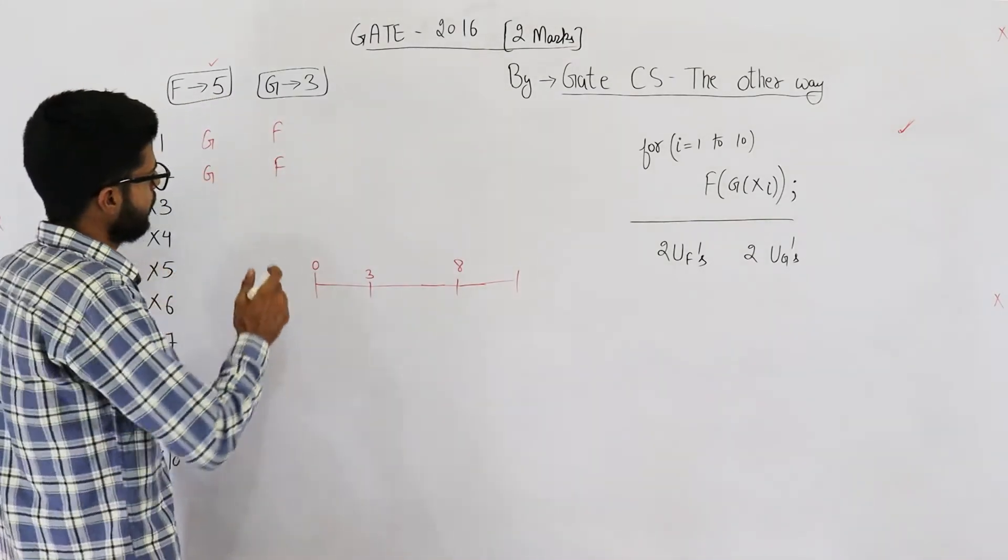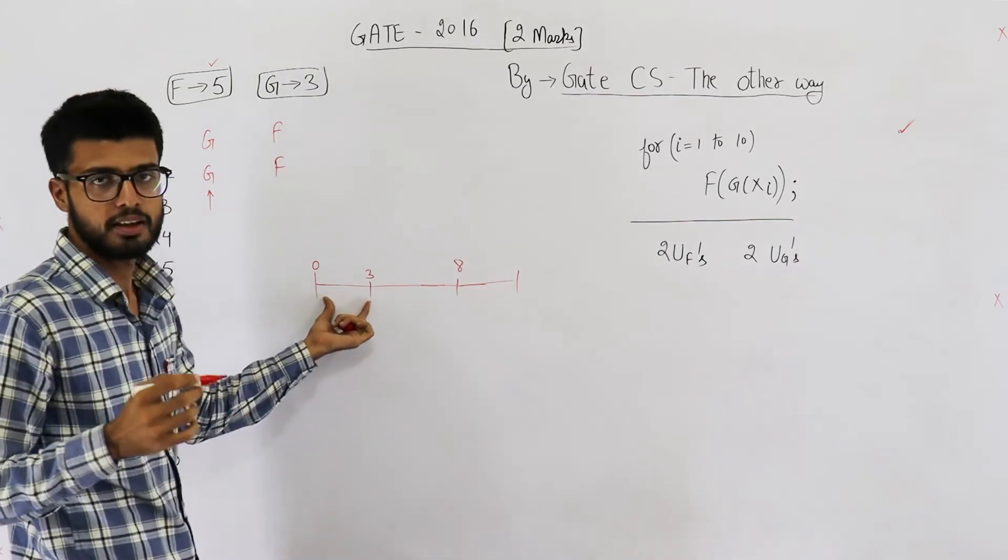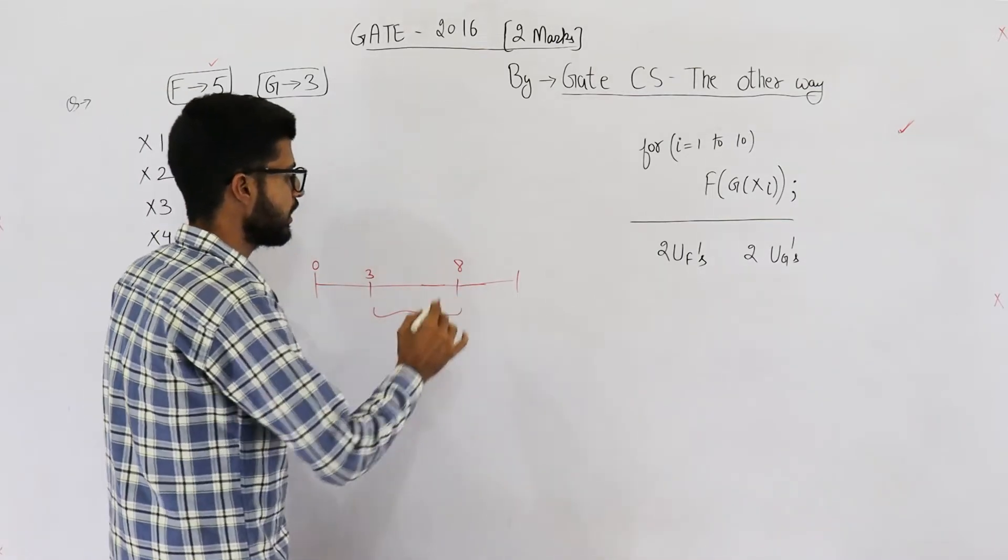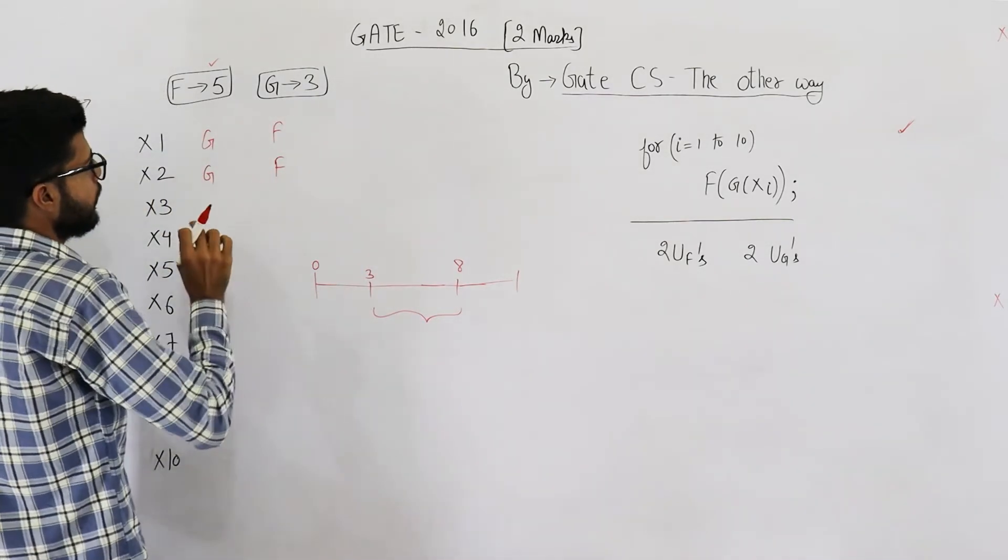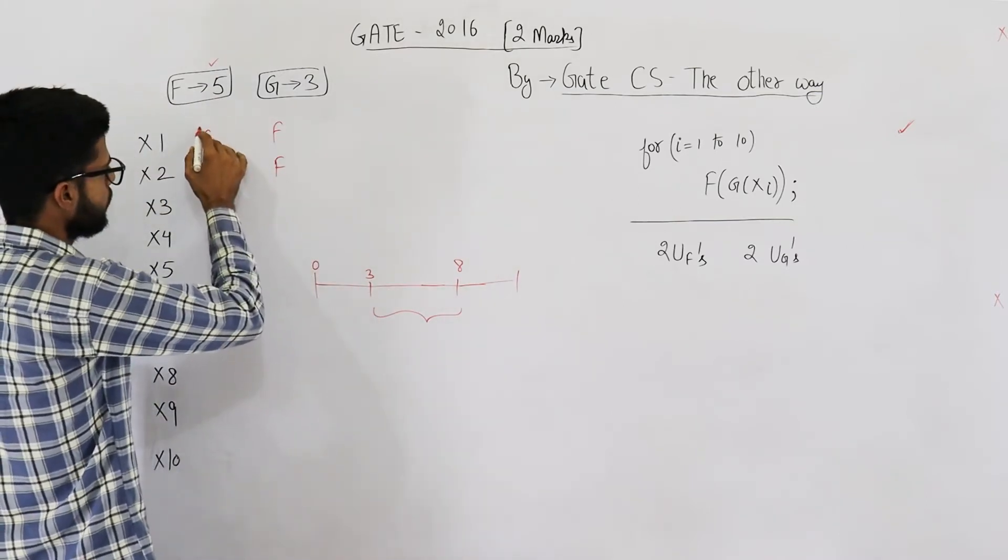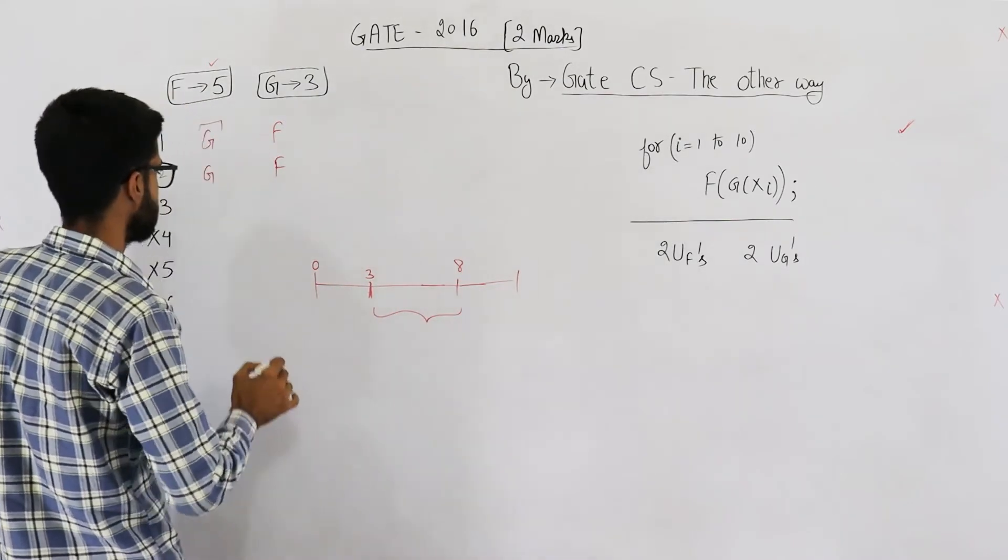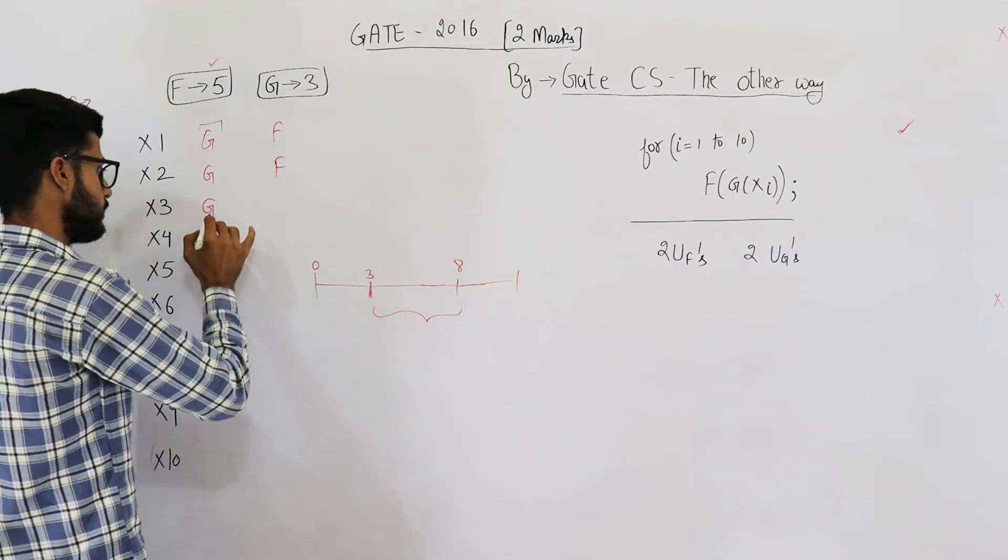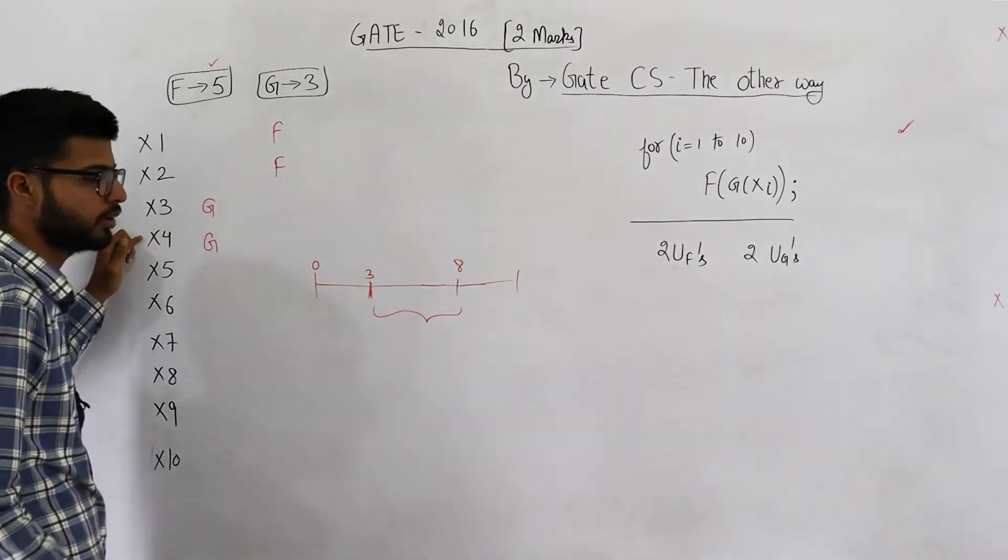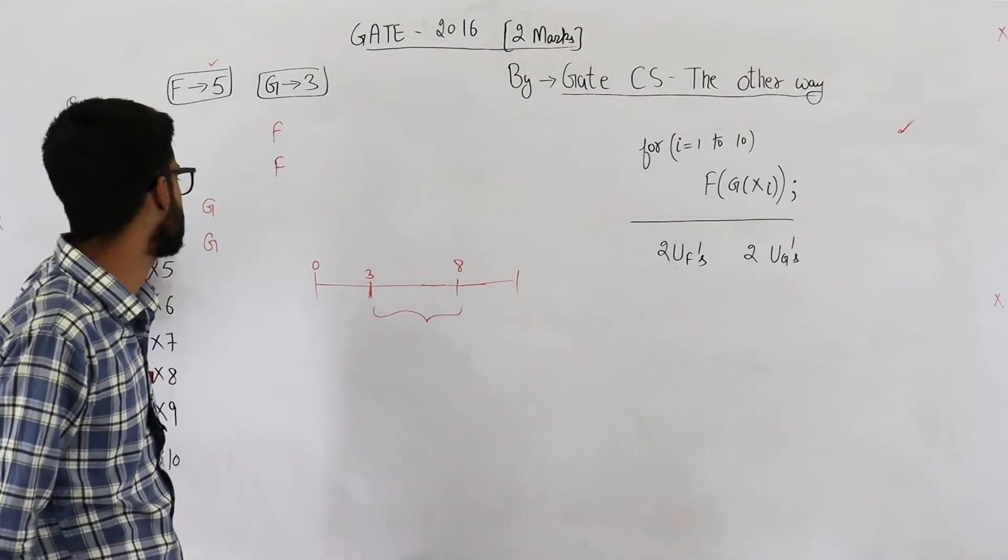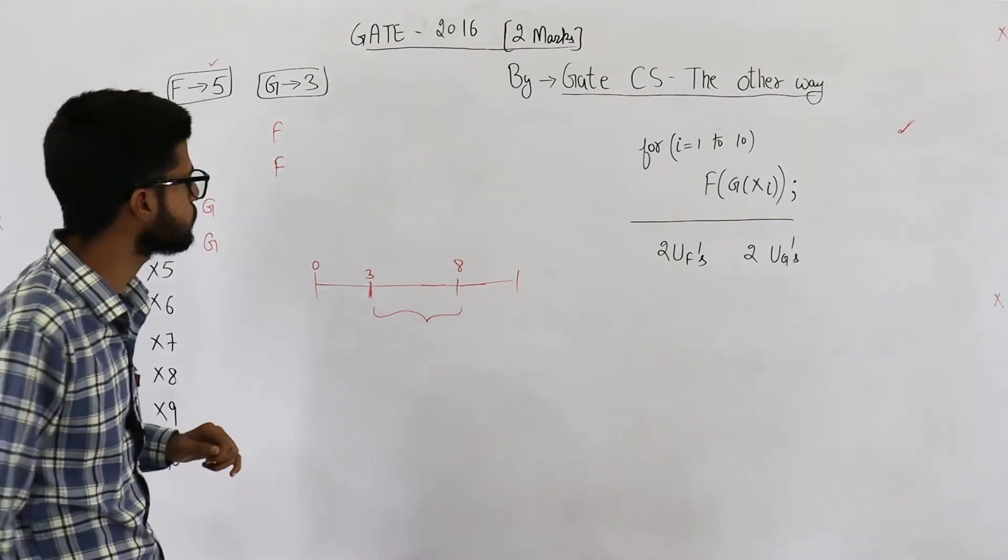The thing is, when these units have done their computation in first 3 seconds, they are free for this time. For these 5 seconds, the unit g is free. So, what is to be done is, from 0 to 3, they are performing computation of g of x1 and x2. After this time, after 3 seconds, you just use units g of x3 and x4 is being computed as well as unit f is performing this computation.